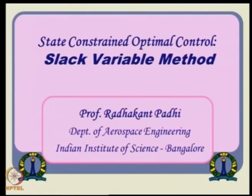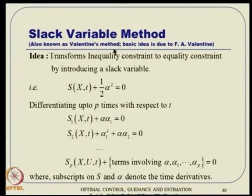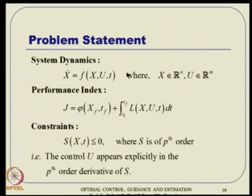The second elegant method is the slack variable method, also called Valentine's method after F.A. Valentine who first proposed it in static optimization. The idea: given an inequality constraint S(x,t) ≥ 0, we introduce a slack variable alpha and rewrite it as an equality: S(x,t) - alpha-squared = 0. Unlike the KKT slack variable used for analysis only, here we actually compute alpha. This converts the inequality into an equality constraint while keeping the problem well-defined.